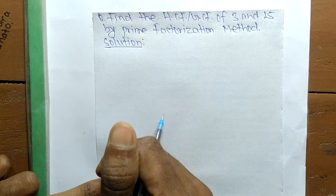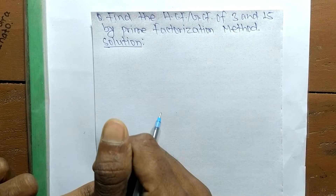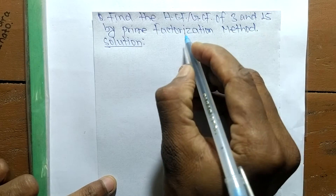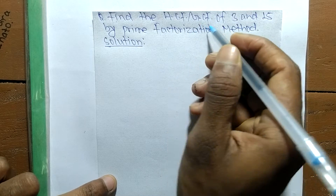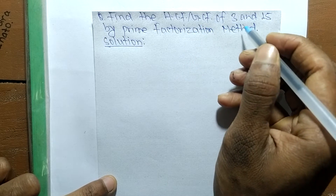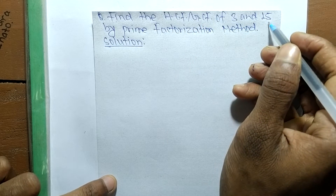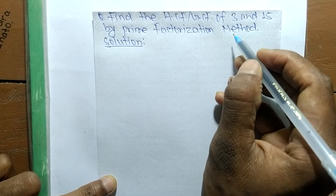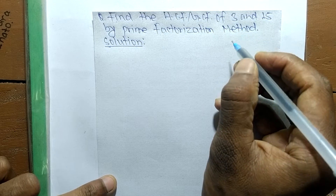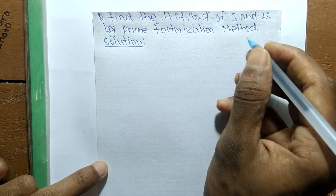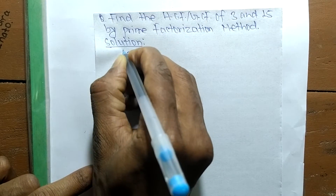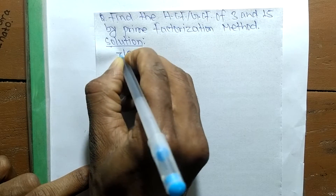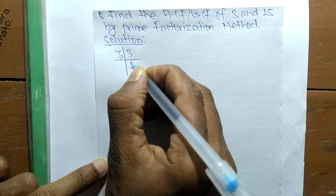Today we shall learn to find the HCF or GCF of 3 and 15 by the prime factorization method. First, we find out the prime factors of 3: it is 3 times 1, which equals 3.